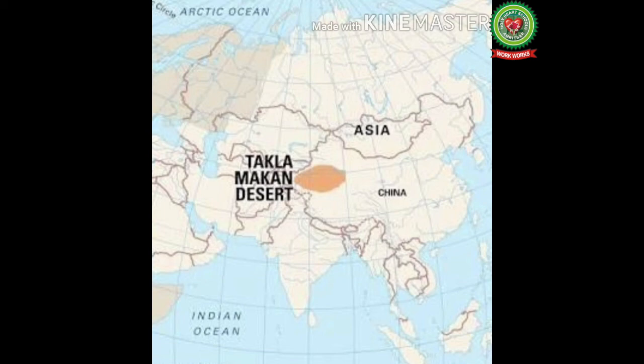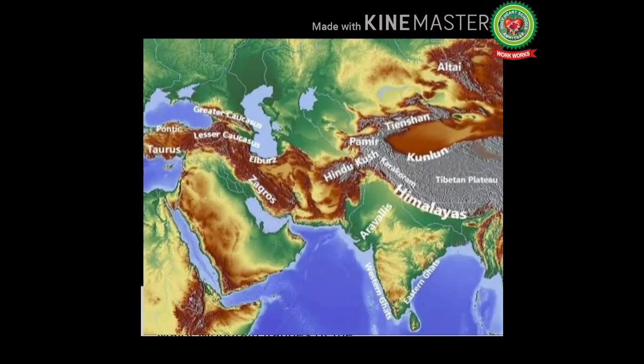Lastly, interesting facts about the central highlands: the world's largest rivers — such as the Ganga, Brahmaputra, Irrawaddy, Salween, Mekong, and Huang He — are formed in the region of the central highlands. These rivers are formed by the melting snow and glaciers of these mountain ranges and greatly influence the lives of people in this region.